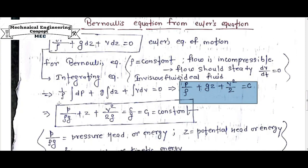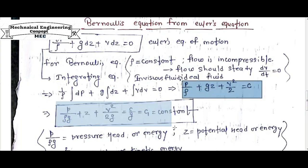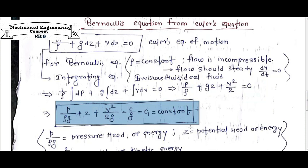Dividing whole of this equation by g, we get this as resultant equation: P by rho g plus z plus v square by 2g is equal to c by g. Here the c by g can also be written as c1 as a constant.